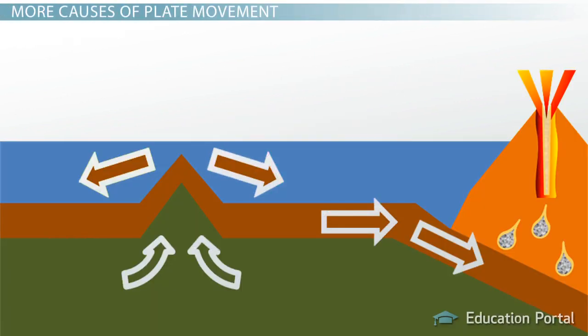At the top of the mantle, the convection currents encounter the thin crust causing it to move. As this movement occurs, the plates smash into each other, slide past each other, or are pushed under another plate. This may also produce secondary events that cause the plates to move.